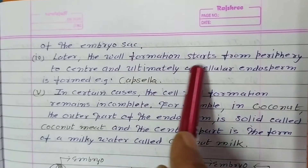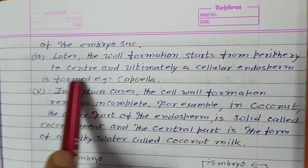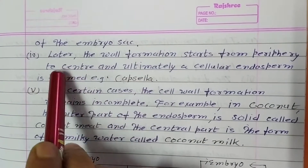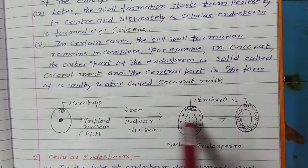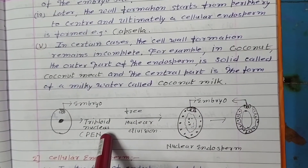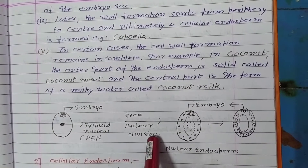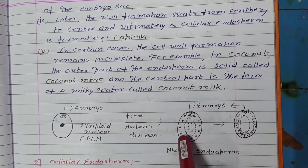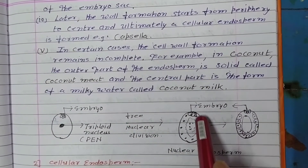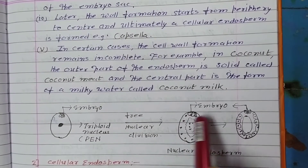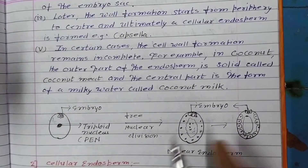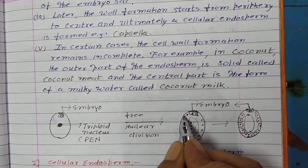Later, the wall formation starts from the periphery toward the center. The nuclei are arranged at the periphery by the triploid body, free nuclear divisions occur, many nuclei are formed, and finally wall formation takes place from periphery to center.